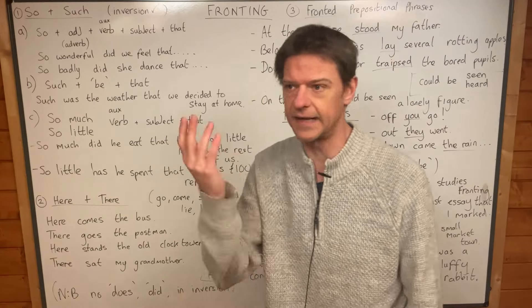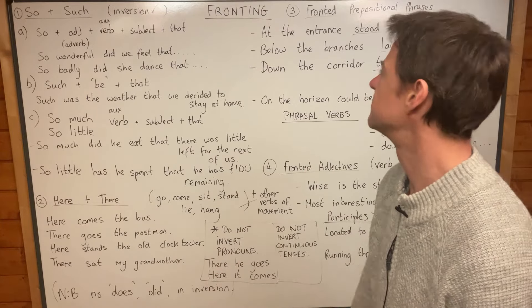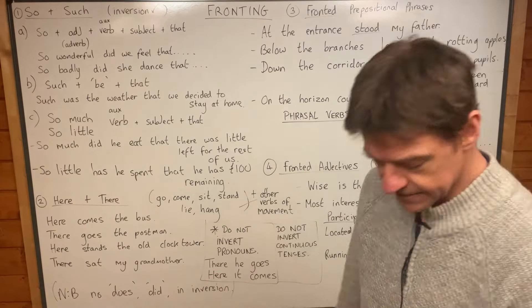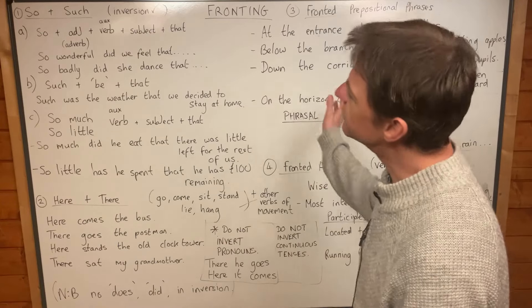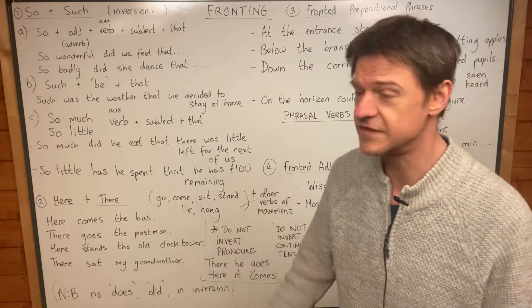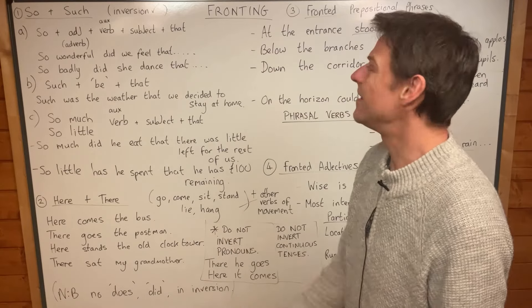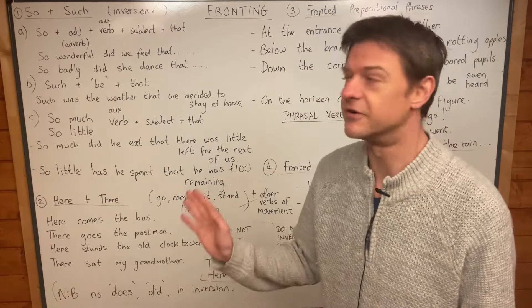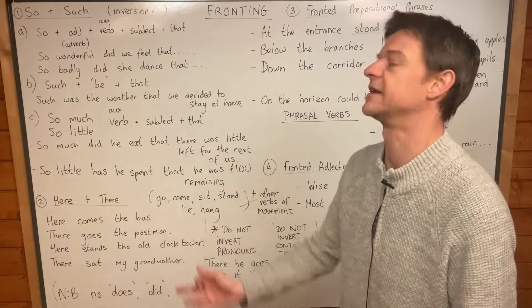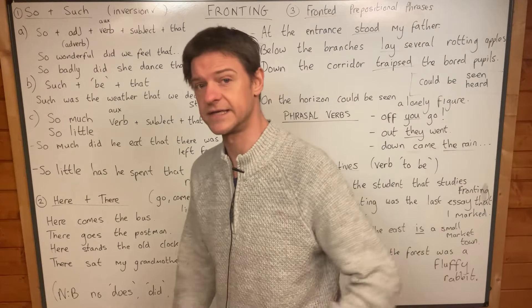For example: I, he, gave, the teachers — whatever. You normally see the subject, but sometimes you don't and sometimes we put something else at the front of the sentence. There are lots of different ways we can do this, but there are a finite number of ways — only certain ways we can put something at the front. So let's look at four different types of fronting.